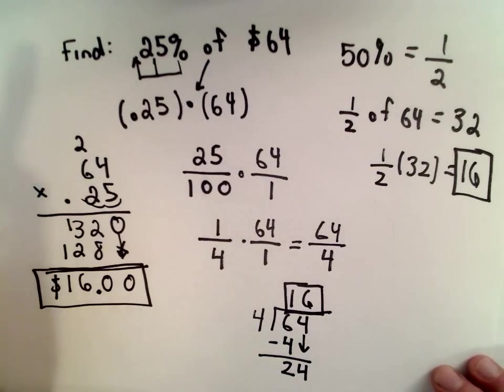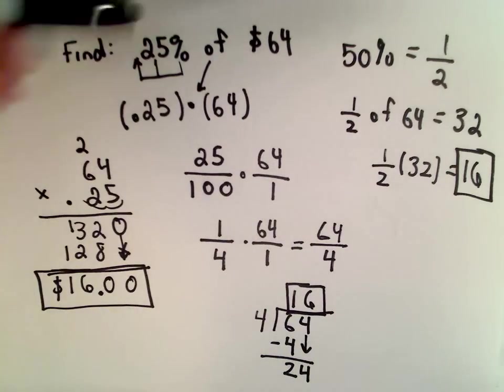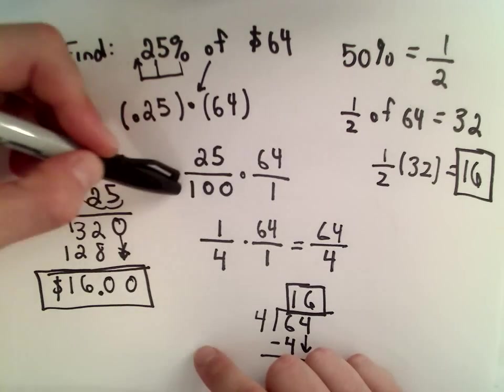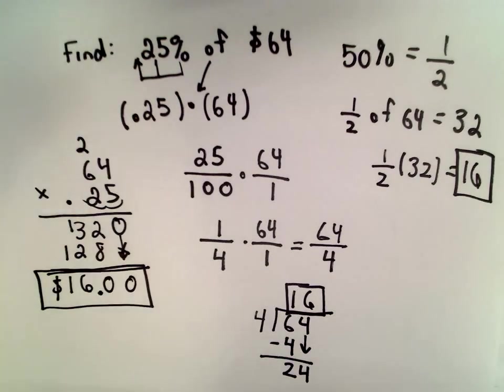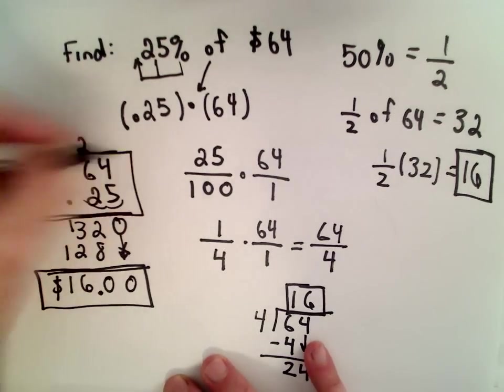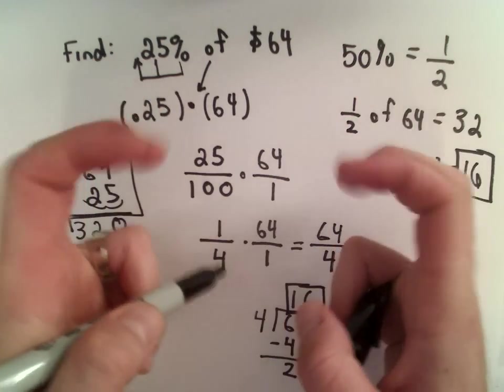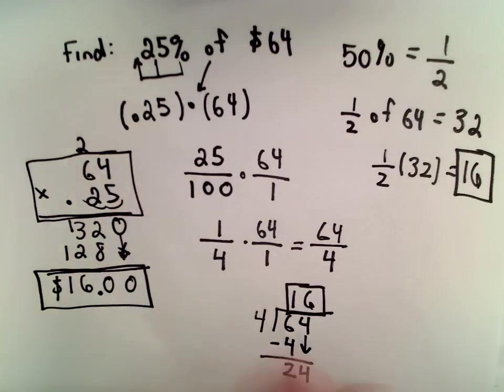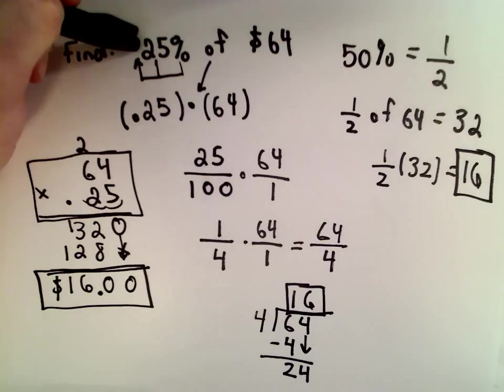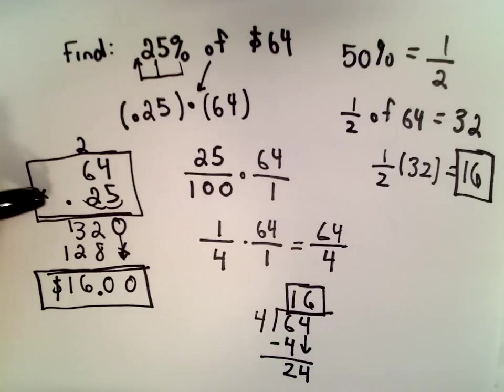If I didn't have such nice numbers, if this was like 23%, 23 over 100 doesn't reduce nicely. This is probably the way I would do it if I didn't have nice numbers, okay? So, if it wasn't something nice and round, 25% is easy to work with. If it was a different value, I think I would just jump to the multiplication, grind it out real quick, and move on to the next problem. Thank you very much.